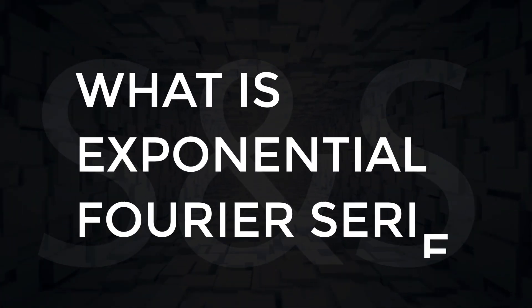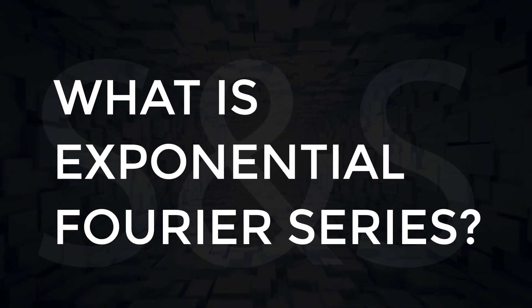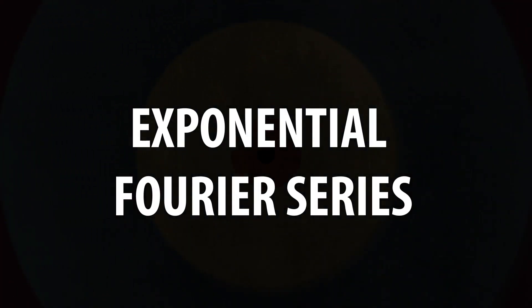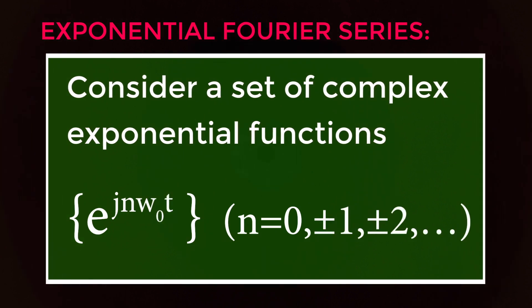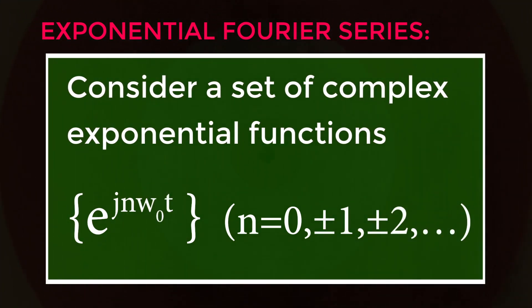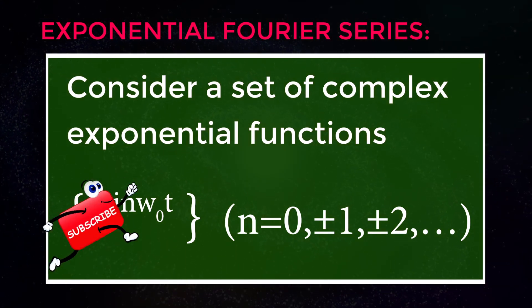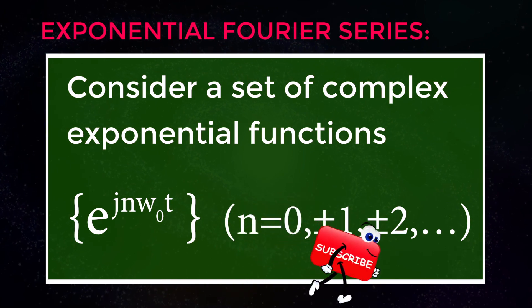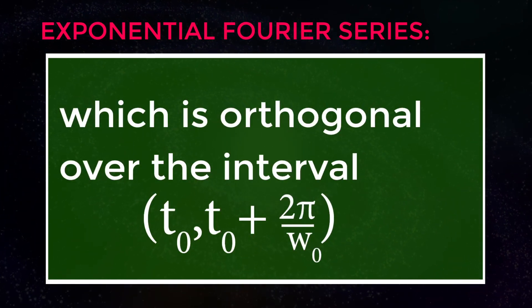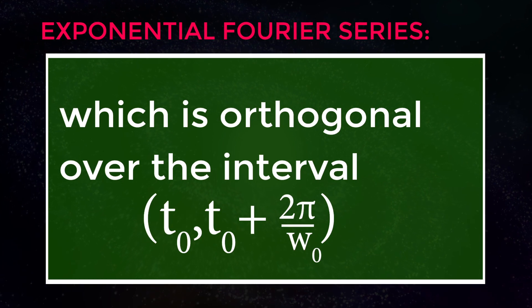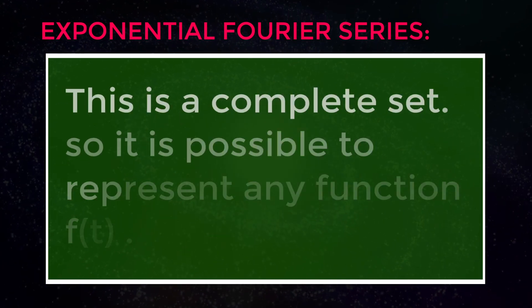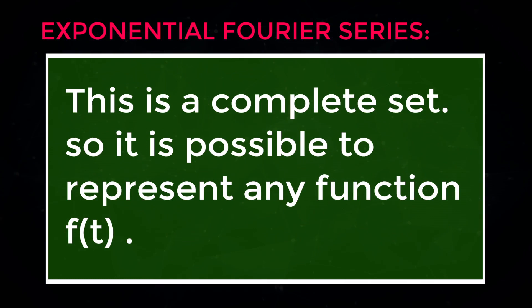What is exponential Fourier series? Consider a set of complex exponential functions: exponential of j·n·ω₀·t, where n equals 0, ±1, ±2, and so on. This set is orthogonal over the interval t₀ to t₀ + 2π/ω₀. Since this is a complex set, it is possible to represent any function f(t) as shown below.